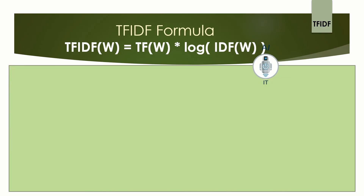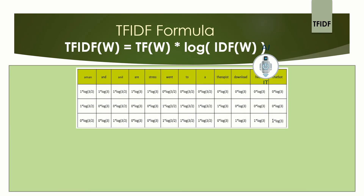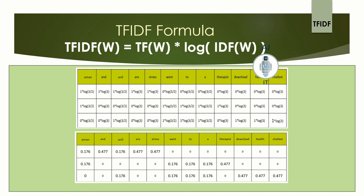Substituting the values and converting to numbers: the value of AMAN is 0.352, adding 0.176 and 0.176 together. The value of AND is 0.477 — AND is a stop word, but the value is high. ANIL again is 0.352. ARE, also a stop word, is 0.477. STRESSED is again 0.477. This way you find the total value by adding all values in each column for each word.